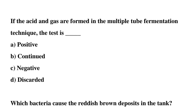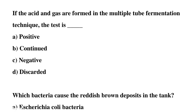Next question: if acid and gas are formed in the multiple tube fermentation technique, the test is option A: positive, option B: continued, option C: negative, option D: discarded. The correct answer is option A: positive.